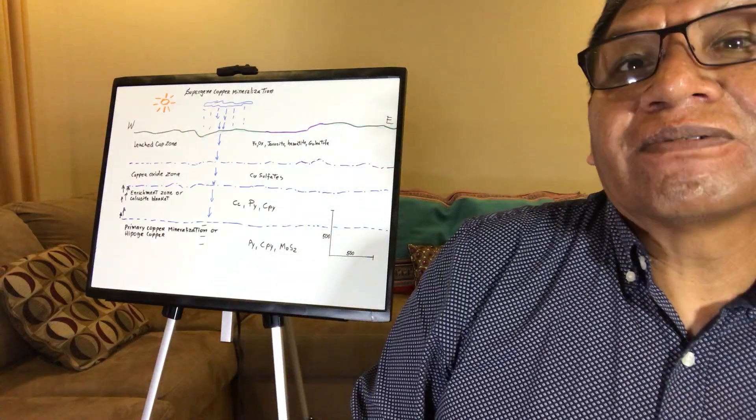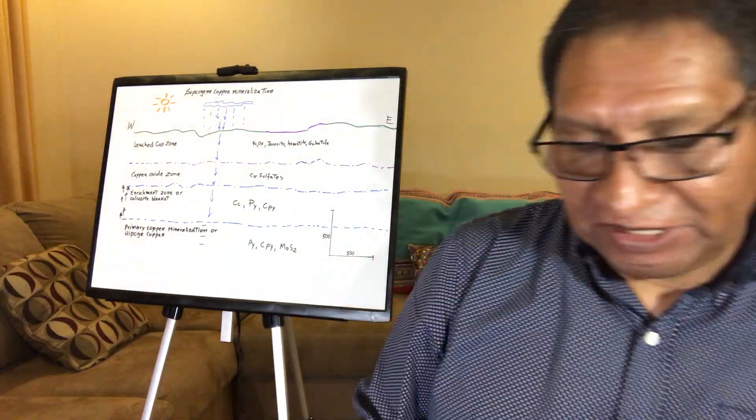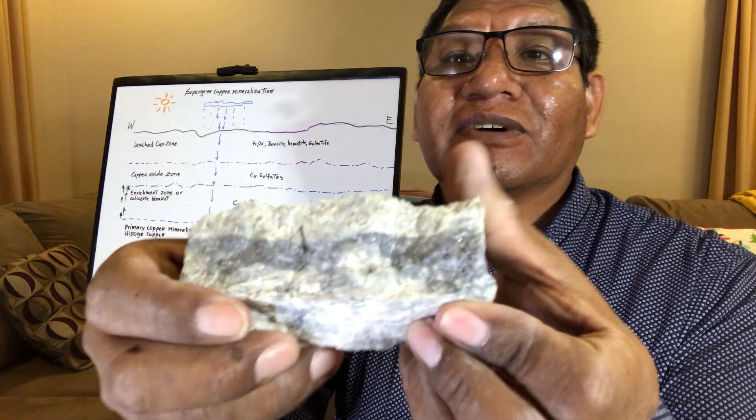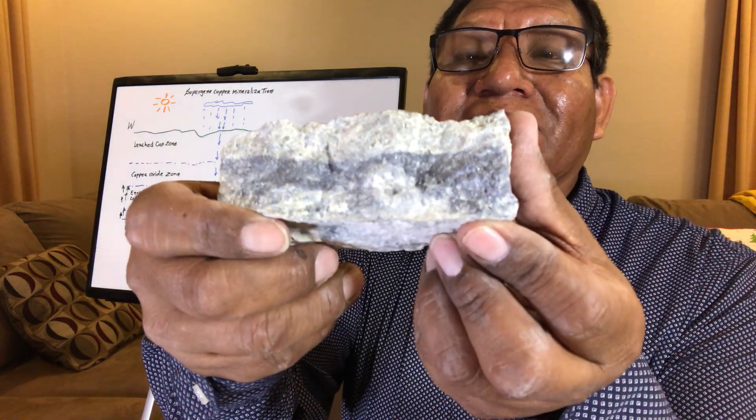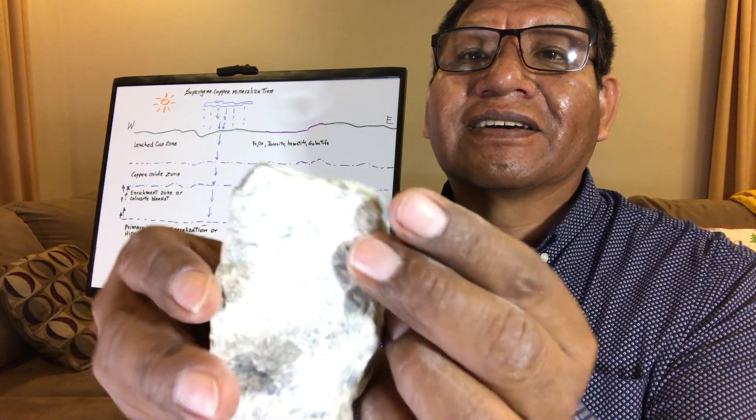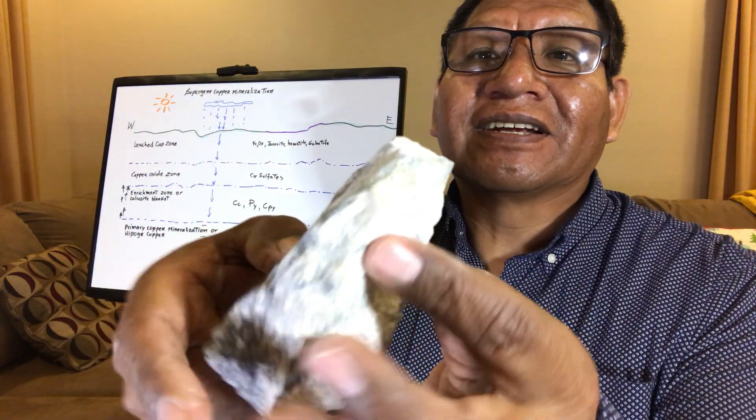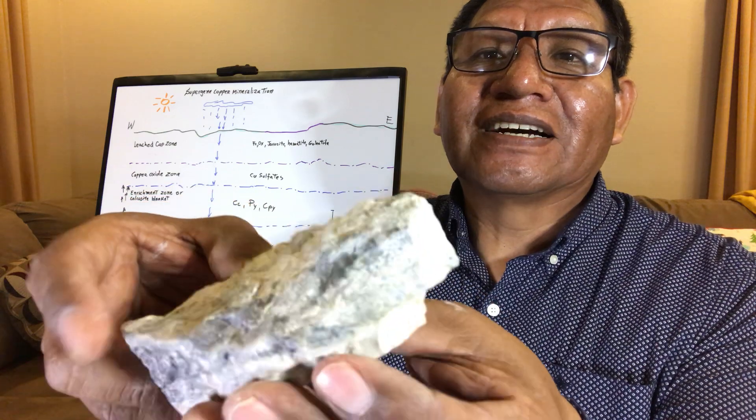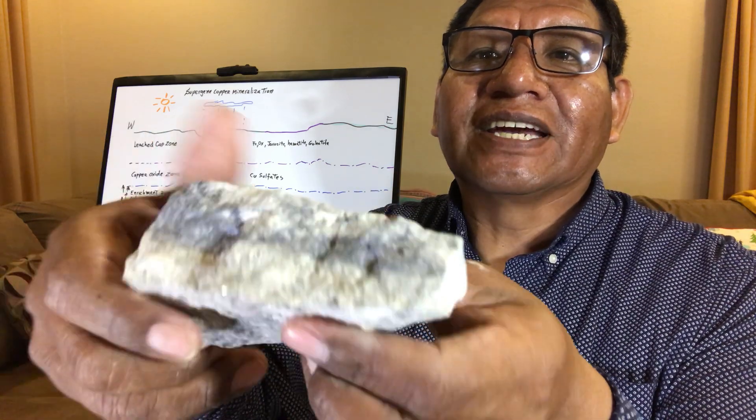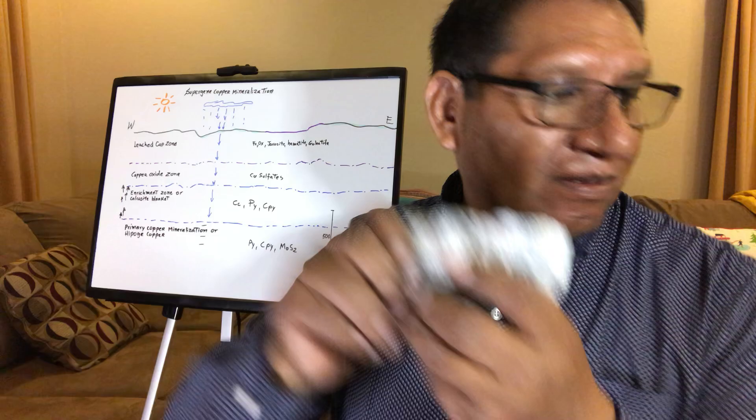And the other one is very important in the porphyry copper system is molybdenite. You can see the veinlet over there, all the veinlet over there, that's very nice, the vein, molybdenite.